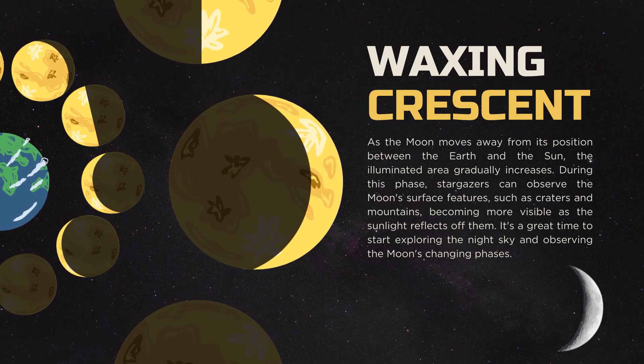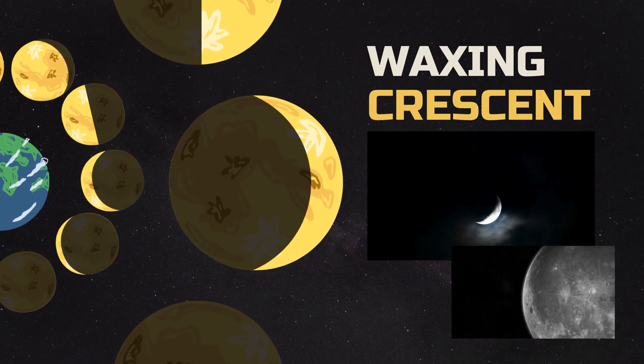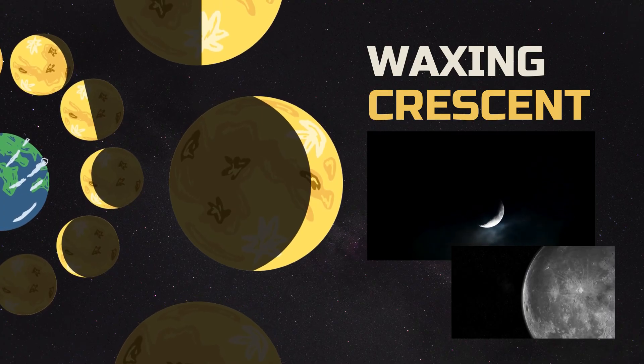During this phase, stargazers can observe the Moon's surface features, such as craters and mountains, becoming more visible as the sunlight reflects off them.